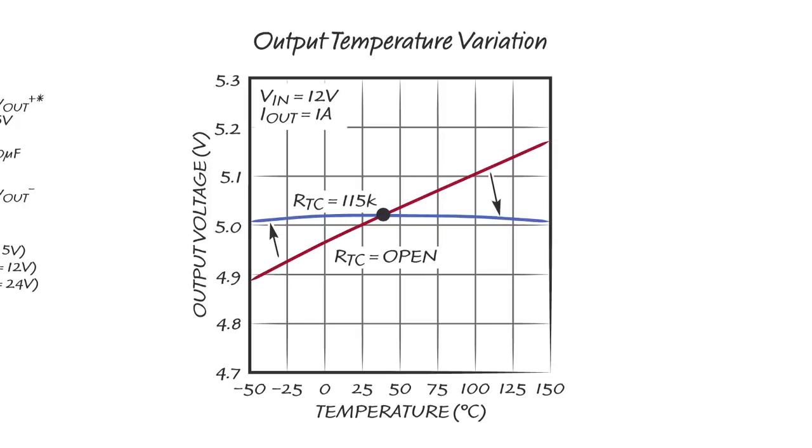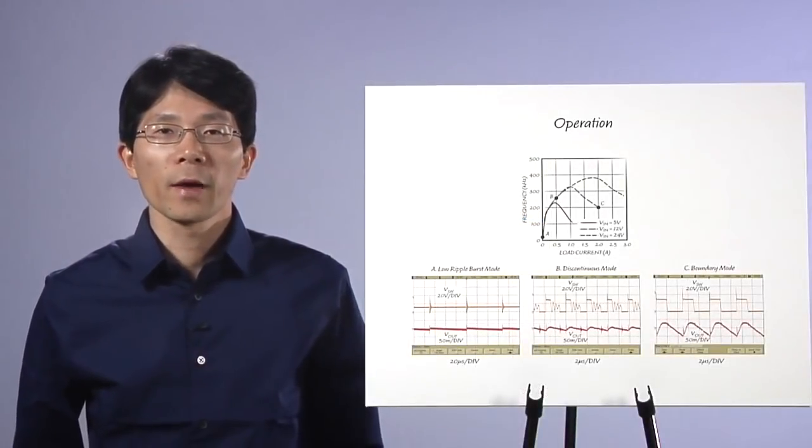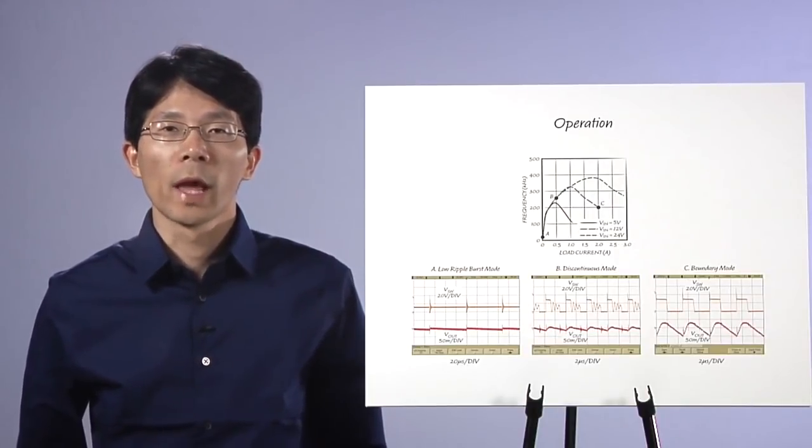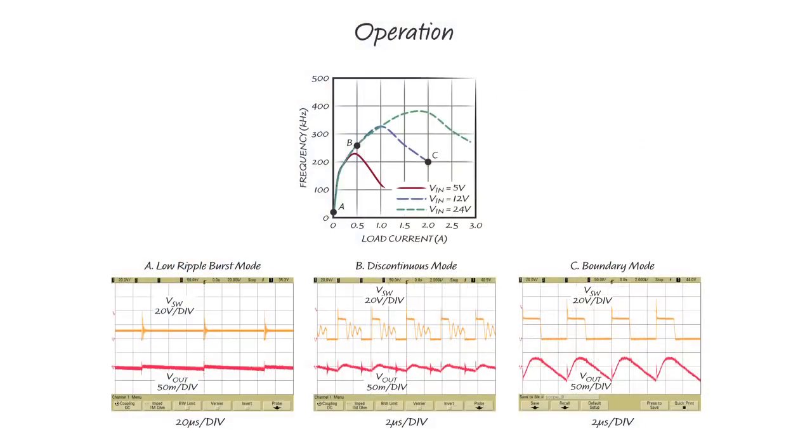With a 115K TC resistor, the output variation across temperature is fully compensated. Now let's use a 5-volt application with LT8302 to demonstrate the operation and performance of our Low IQ No Opto Flyback ICs.